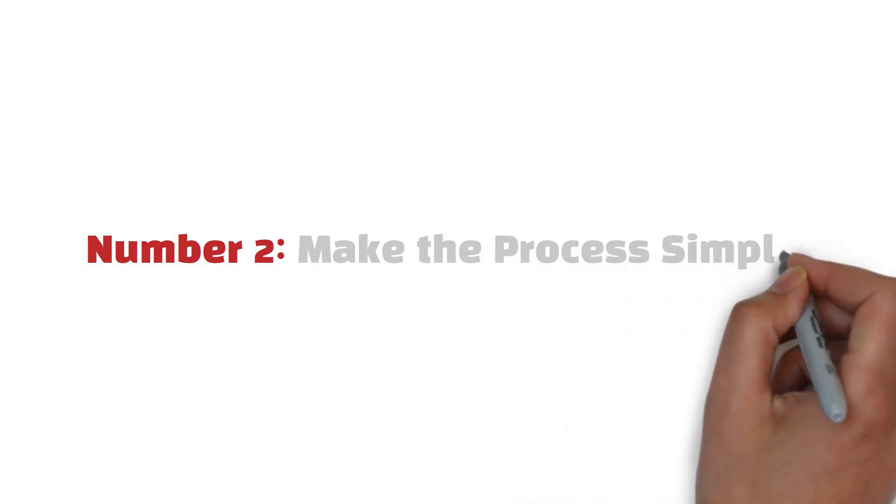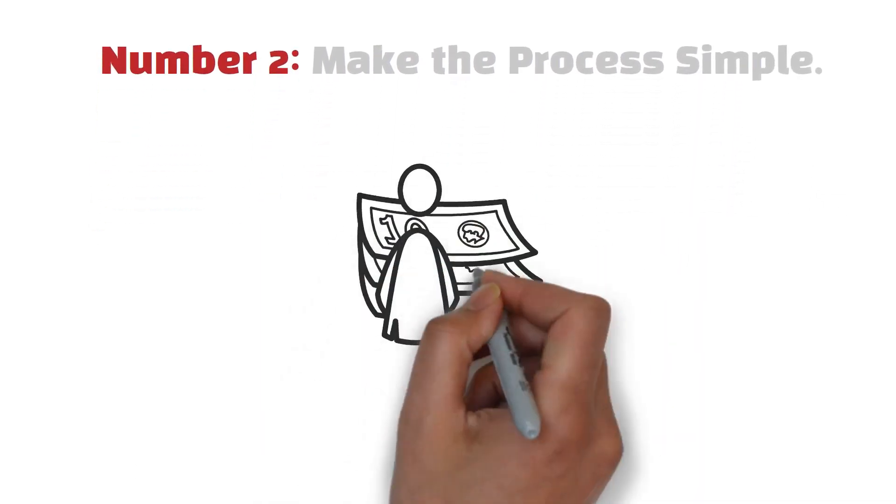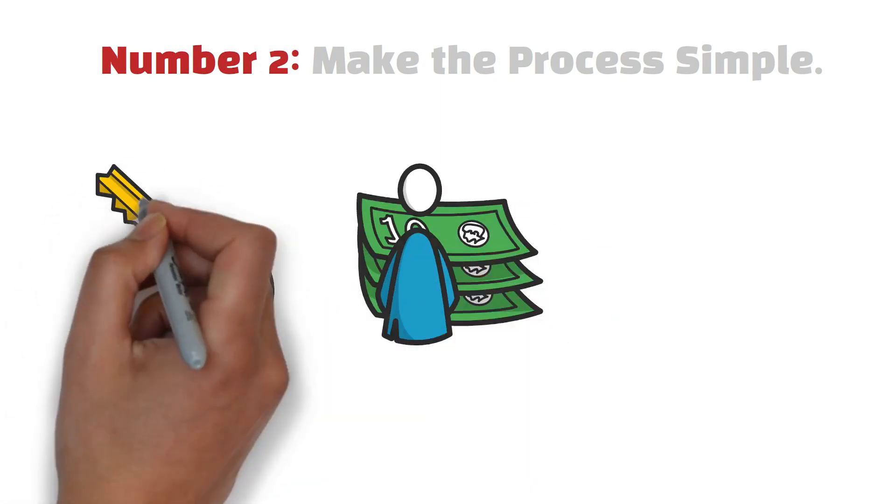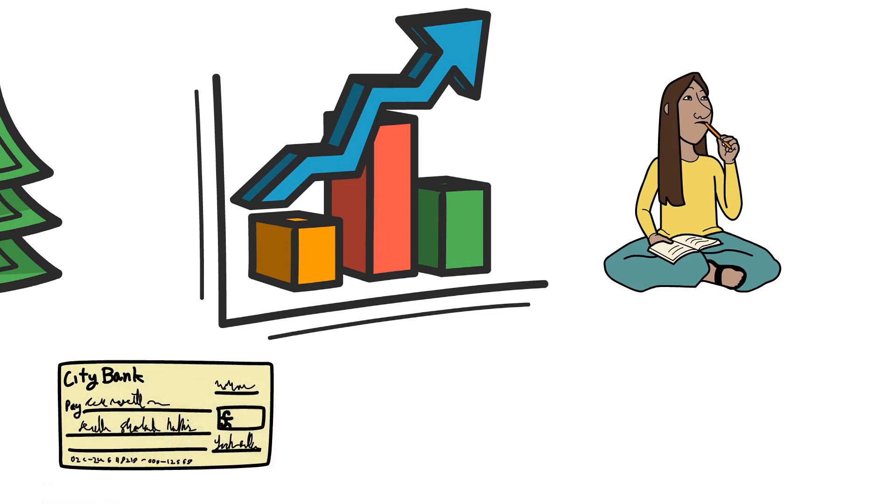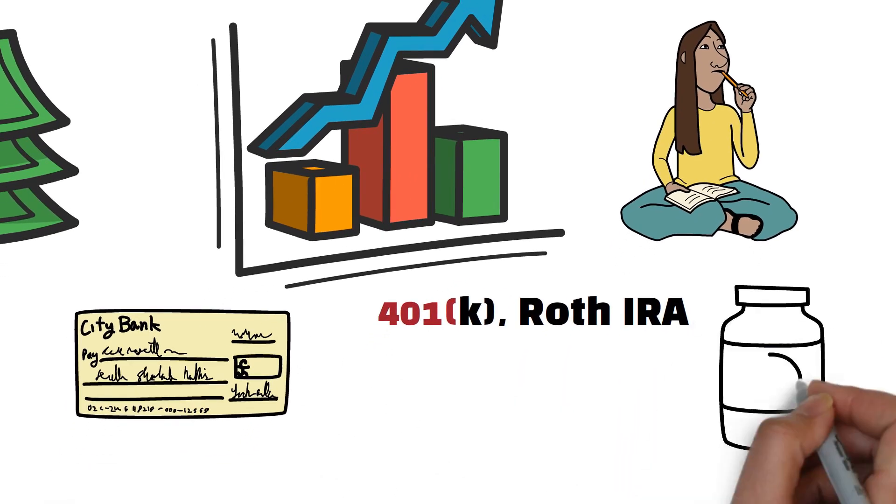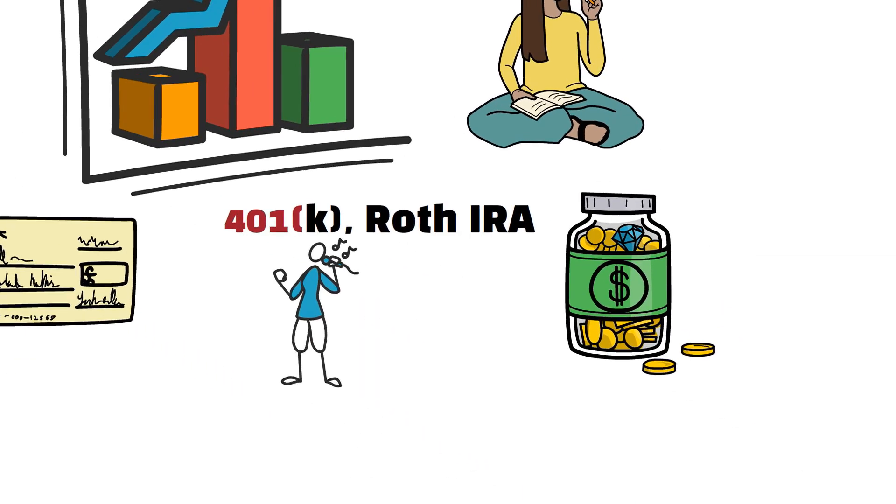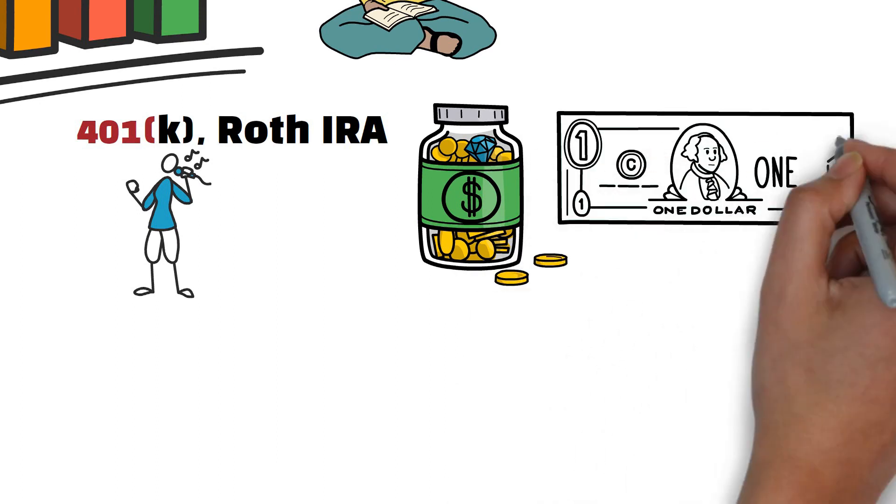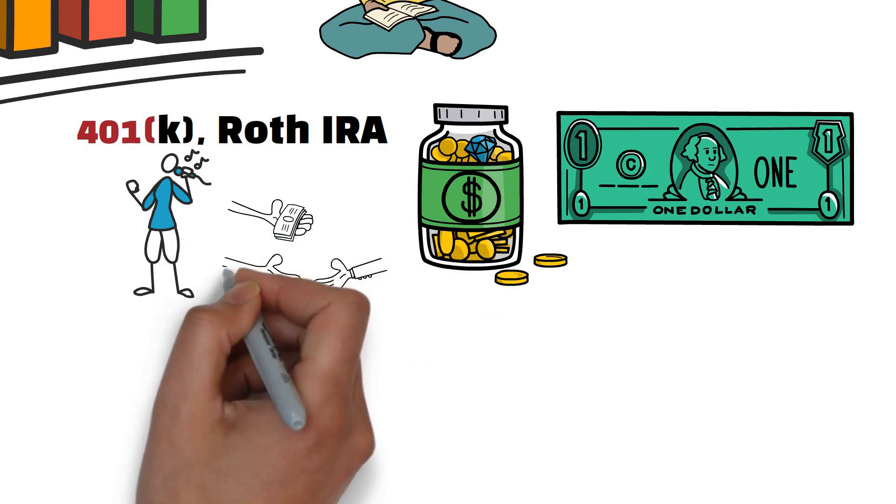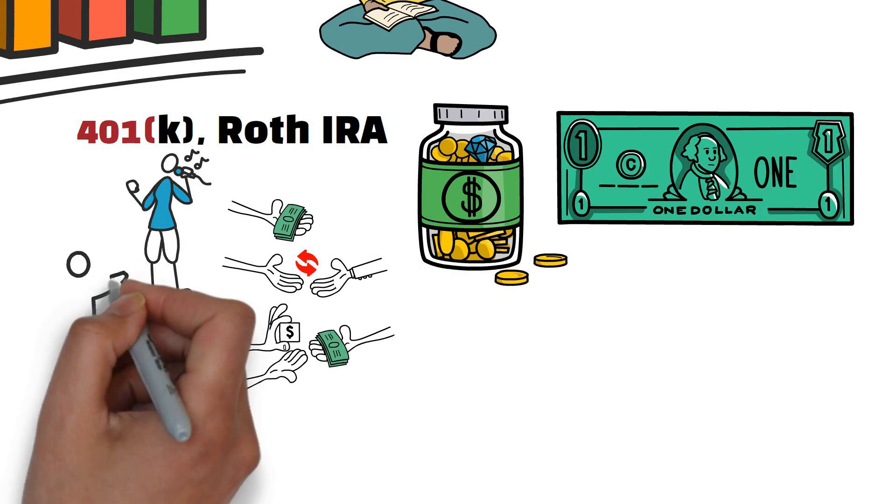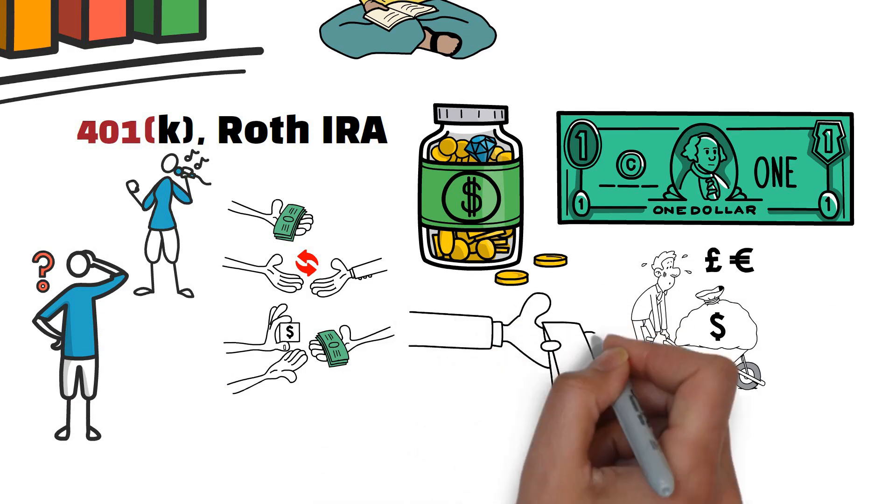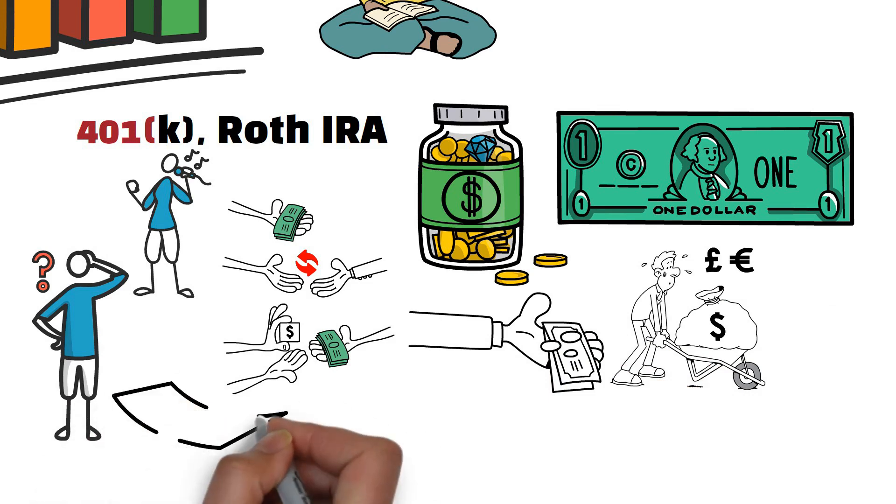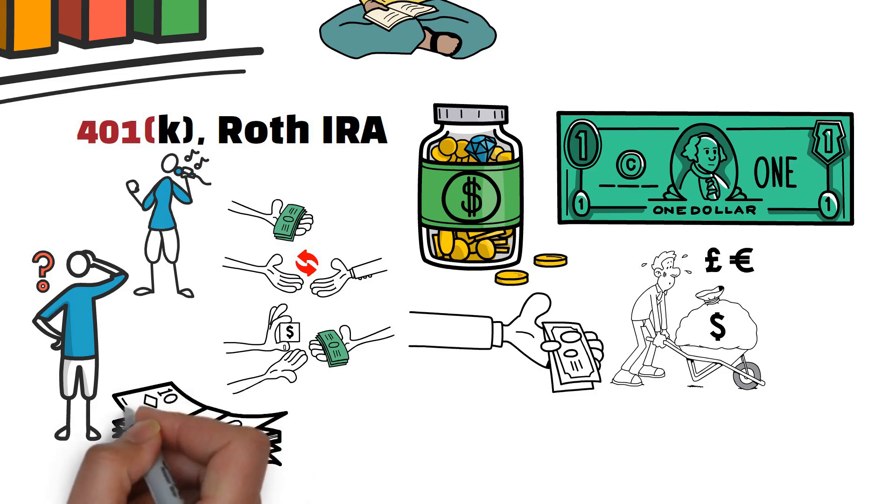Number 2. Make the process simple. In the intricate dance of personal finance, simplicity is the unsung hero. The key to consistency lies in making the financial process as straightforward as possible. Imagine your paycheck effortlessly flowing into your various financial buckets: 401k, Roth IRA, investment accounts, and savings. Like a well-orchestrated symphony, automation is the conductor that ensures each note is played seamlessly. Setting up automatic contributions and deposits not only liberates your time but also acts as a stress relief valve. It answers the perennial question that echoes in many minds: Where is my money going? Start small, if need be. Then gradually amplify your financial crescendo. The symphony of wealth creation is composed note by note, and automation ensures that each note is played in harmony, building a robust financial future.